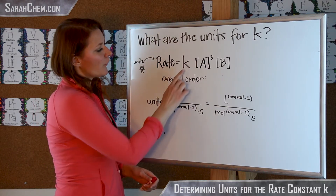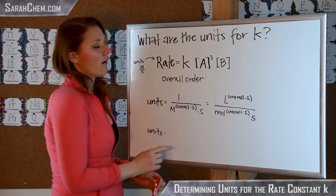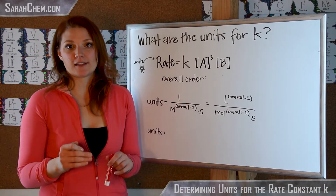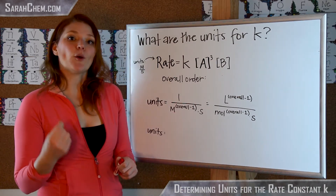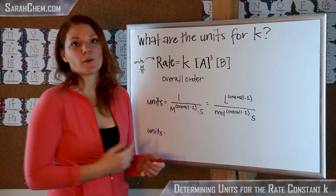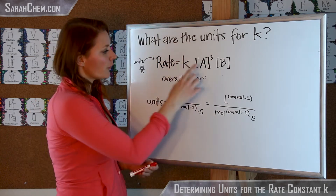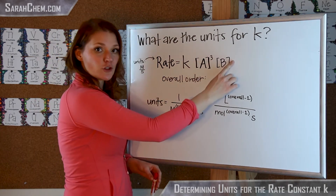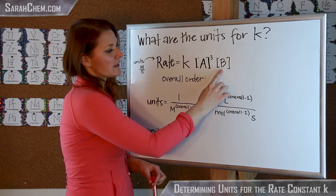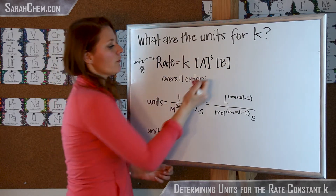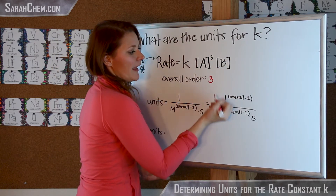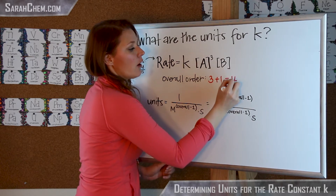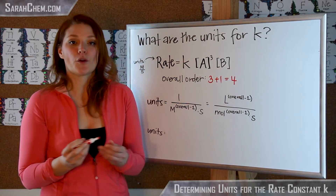So now, when you're trying to figure out what the units for K are, the first thing you have to do is figure out what the overall order of the reaction is. Remember, order relates to the exponents that you have. So for A, it would be third order with respect to A, and first order with respect to B. Now if you want to figure out the overall order, that would be 3 from the A plus 1 from the B, so overall this is a fourth order reaction.